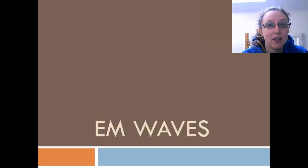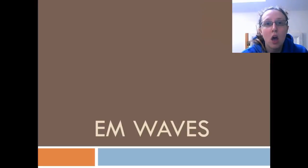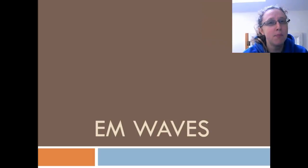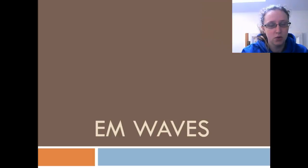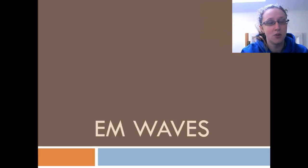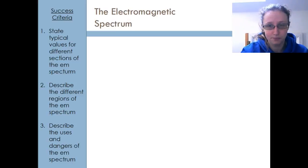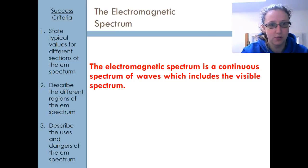Next up is electromagnetic waves. Hopefully you already know the electromagnetic spectrum, but you do need to know some facts about all of the bits along it. You also need to be able to give estimates of the size of the wavelengths for the different sections of the EM spectrum. So let's just make sure we've got an idea of what we mean by EM spectrum.